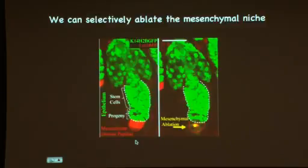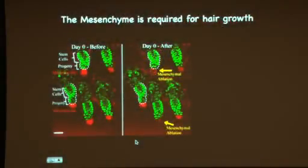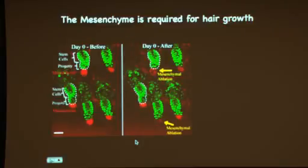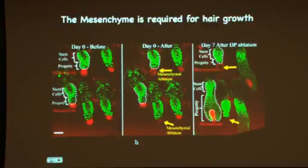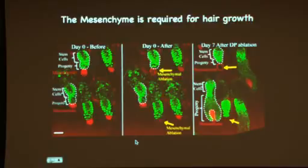He then re-imaged the same follicle and asked whether regeneration is impaired. Using internal controls — clusters of follicles where only two are ablated while others are left intact — what he sees is that the follicles without the mesenchyme are stuck and cannot grow, whereas the surrounding follicles with an intact mesenchyme regenerate properly. This shows, number one, that the mesenchyme is required for hair regeneration — the first time this has ever been shown — and also gives us the opportunity to address the functional requirement of any population during regeneration and in hyperproliferative phenotypes.